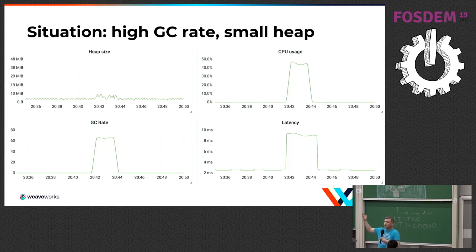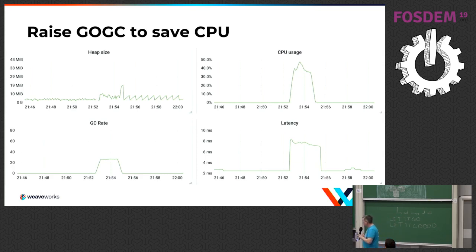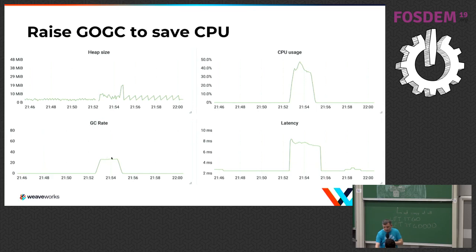We can go in the opposite direction - we can raise GOGC. We can tell the Go garbage collector we'd like it to use more memory - just chill out and use more memory. So this is GOGC equals 200. Now we're letting the program use twice as much heap. We can see that sawtooth effect - it's leveling out at about 10 megabytes. It's still not using very much more memory, but compared to the previous setting it's garbage collecting half as often.